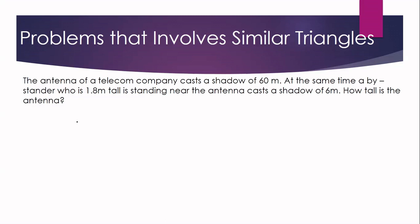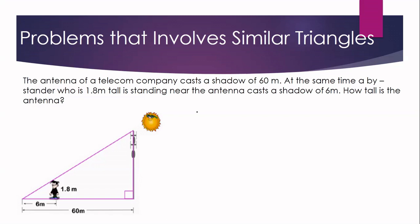The first thing we have to do is to illustrate the given problem. Here is the illustration — this is the antenna and this is the bystander. The bystander is 1.8 meters tall and the shadow is 6 meters. The shadow of the antenna itself is 60 meters. What is being asked is how tall is the antenna, so we let X equal the height of the antenna. If you notice, this is a similar triangle.